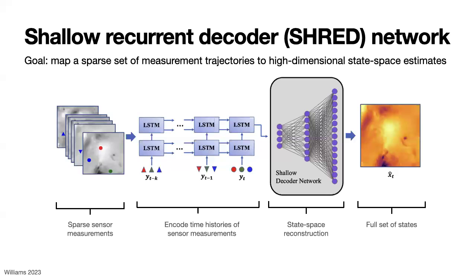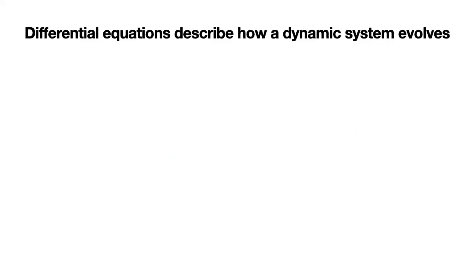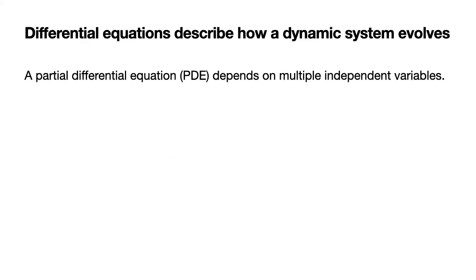The theoretical underpinnings of SHRED are based on the separation of variables technique for linear partial differential equations. How many of you have taken a differential equations class or know what PDEs are? At its core, a differential equation is just a way to understand how a system changes. There are two basic types: ordinary and partial. An ordinary differential equation, or ODE, is a function of one independent variable such as time alone. A partial differential equation, or PDE, depends on multiple independent variables such as time and space.